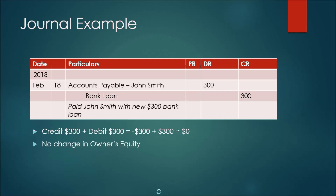Here's what it looks like in a journal — dated February 18th. Accounts payable is the account being debited, so it appears first with a debit of $300. The bank loan is being credited, so it has a credit of $300. Negative $300 on the credit plus $300 on the debit equals $0, which means no change in owner's equity. Furthermore, debit equals credit — $300 equals $300 — so the journal is balanced.